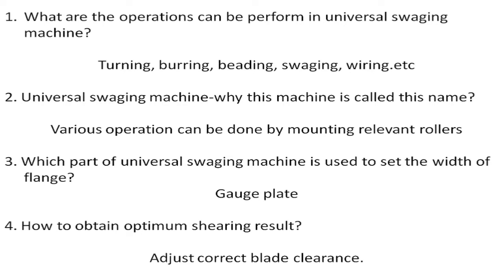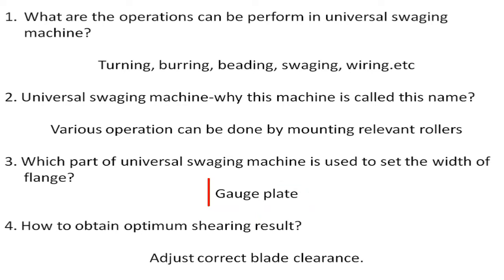Which part of the Universal Swaging Machine is used to set the width of the flange? The gauge plate is used to set the width of the flange. The gauge plate is mounted on the lower shaft.